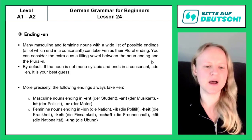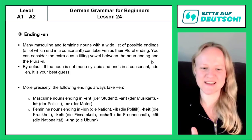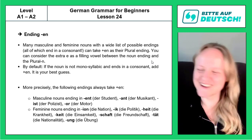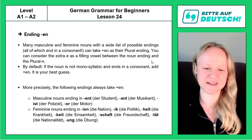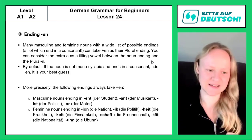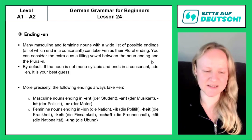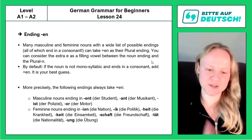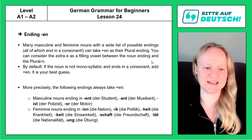There are quite a few feminine noun endings where you can always safely apply -en. Feminine nouns ending in -ion: die Nation → die Nationen. Nouns ending in -ik: die Politik → die Politiken, although this is quite rare. Nouns ending in -heit: die Krankheit → die Krankheiten (sickness/illness). Nouns ending in -keit: die Einsamkeit → die Einsamkeiten (loneliness). Nouns ending in -schaft: die Freundschaft → die Freundschaften (friendship). Nouns ending in -tät: die Nationalität → die Nationalitäten.